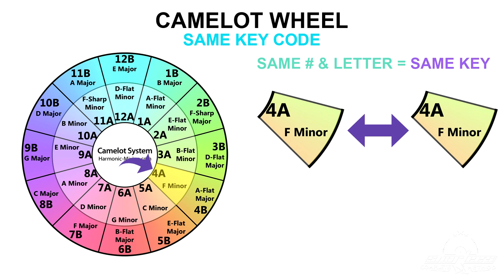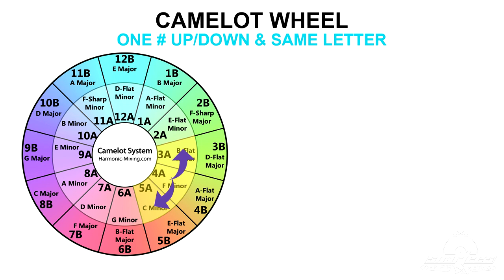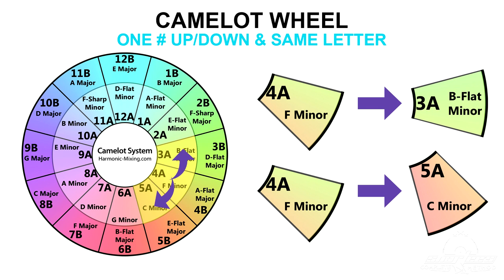The first way you can start to move around the wheel to create compatible tonal mixes is to step one step up or down — moving one number clockwise or counterclockwise around the wheel while staying within the same ring. Just think of the numbers on the Camelot wheel like the hours on a clock. Each number represents a step up or down from the previous number. If you go forward or backward one hour within the same ring, you'll have a harmonically compatible mix. For example, if your first song is in 4A F minor, which is in the inner minor ring of the wheel, then you can mix it into another song that's either 3A B-flat minor or 5A C minor.